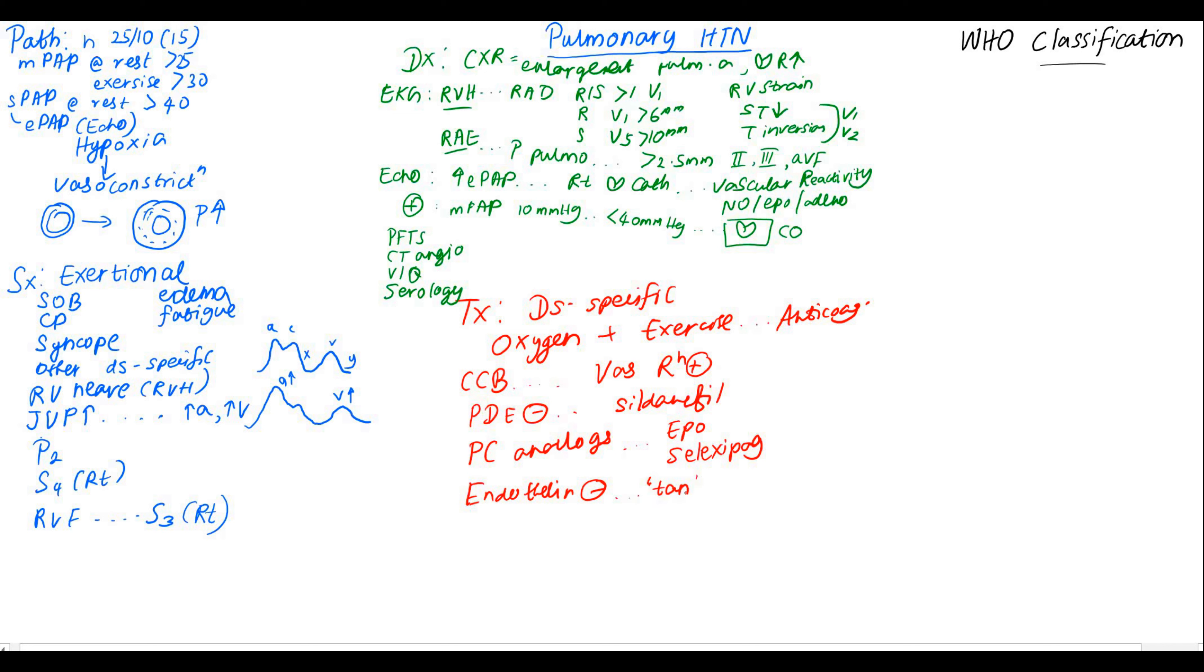Endothelin inhibitors can also be used and they have the suffix -tan in them. Examples are bosentan, ambrisentan, macitentan. They help to prevent the growth of the pulmonary vasculature. Another treatment is the cyclic GMP stimulator. These increase the nitric oxide and an example is riociguat.